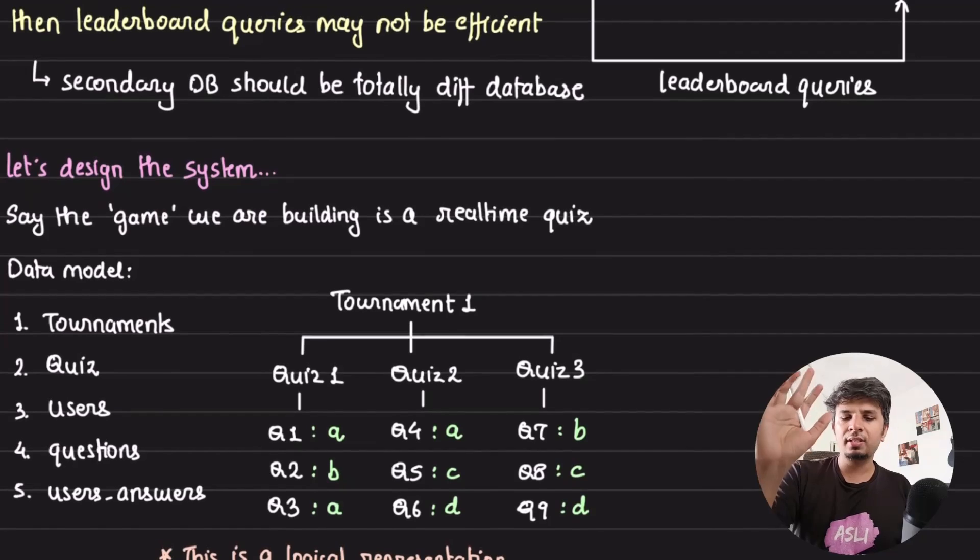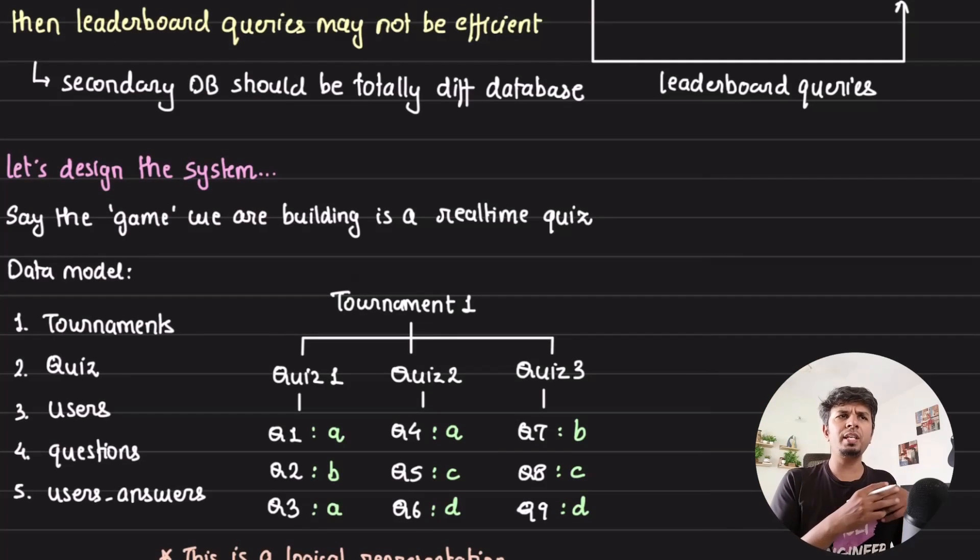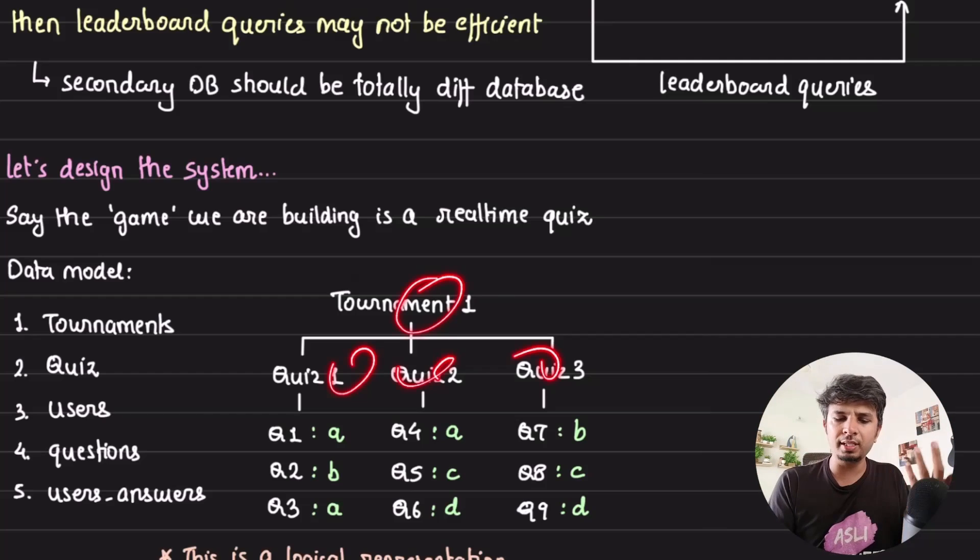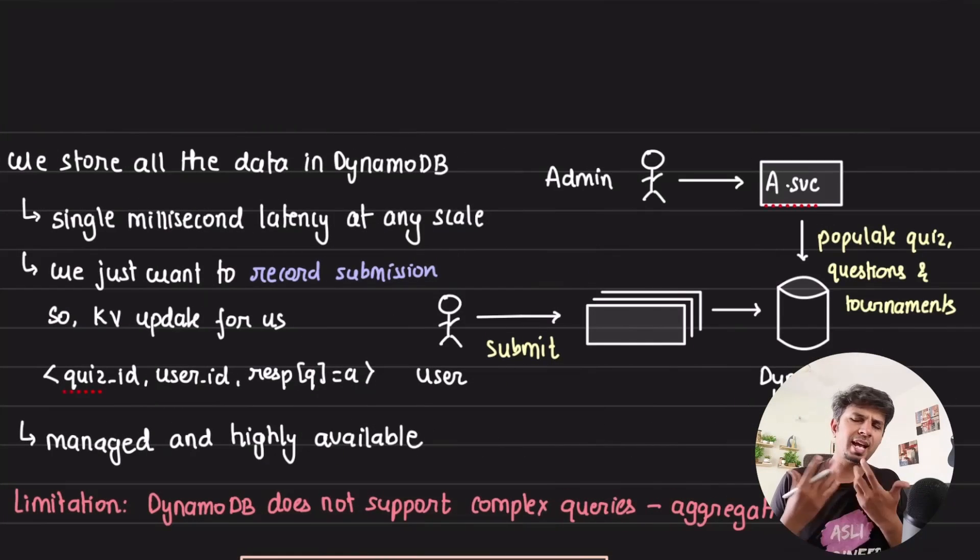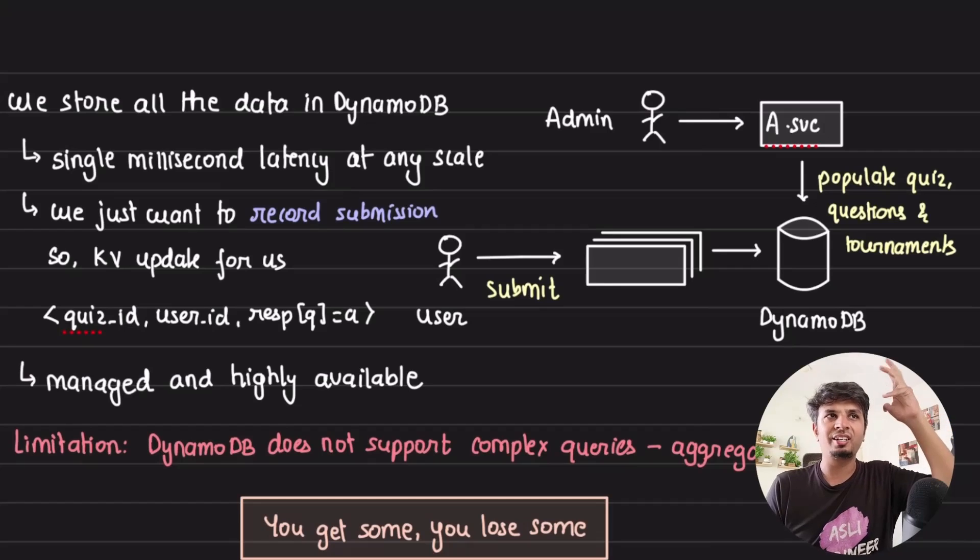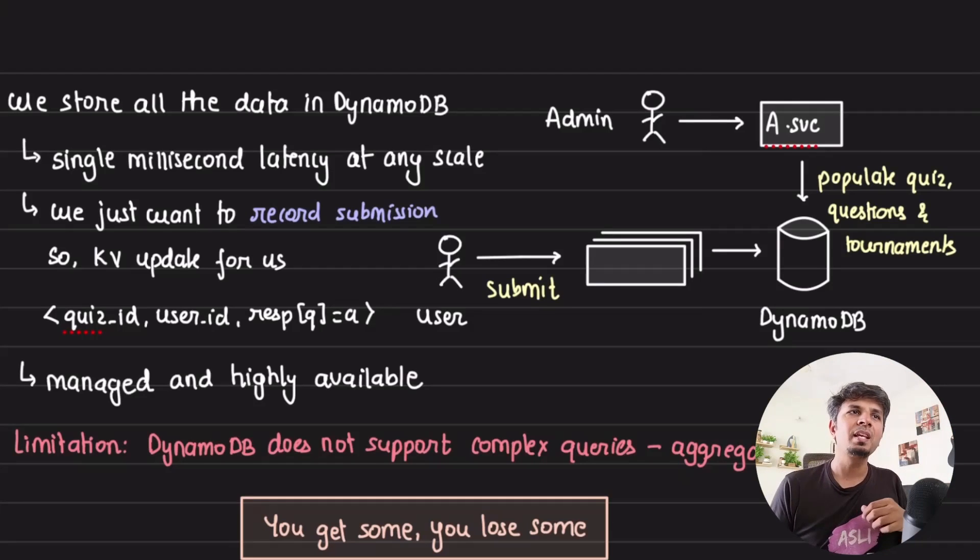Let's start with designing the system. Imagine we are building a game which is a real-time quiz where you have tournaments. One tournament has multiple quizzes, each quiz has multiple questions, each question is answered by a certain user, and you are storing all this information in a database. We choose DynamoDB for this because of single digit millisecond latency at any scale. Whenever a user clicks on something or picks an option, we just want to record the submission. It's literally a key-value update for us.